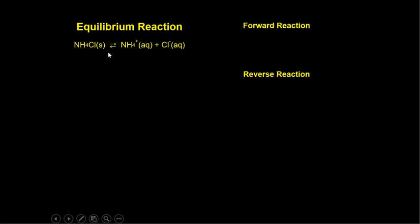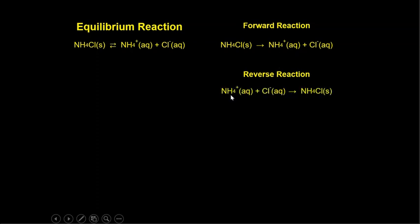Here we've got an equilibrium of ammonium chloride dissolving into its component ions of ammonia and chloride. The forward reaction reads left to right — ammonium chloride dissolving into ammonium and chloride. That's how you can easily look at an equation and identify the forward and the reverse reaction.